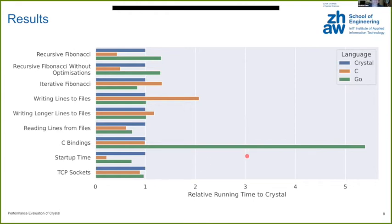If we remove Ruby from the equation, we get a better overview. What first sticks out are the C bindings, in which Go, marked in green, takes quite a lot of time. But in comparison, Crystal in blue is almost the same as C itself in orange. If we compare Crystal directly with C, C is mostly faster, but in some cases it's also slower than Crystal, which is quite impressive. When comparing with Go, Go is sometimes a bit slower and sometimes a bit faster, but overall the performance is very comparable between these two languages.